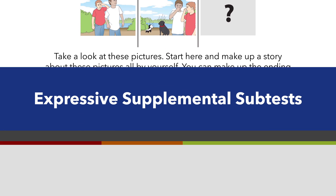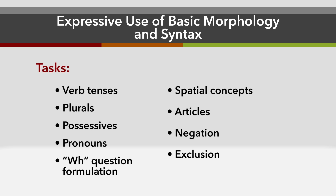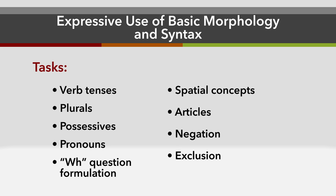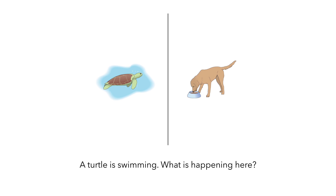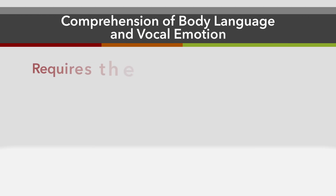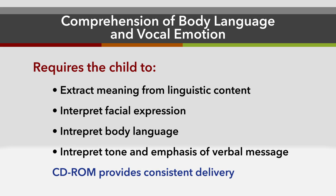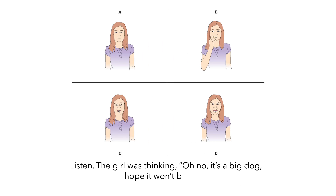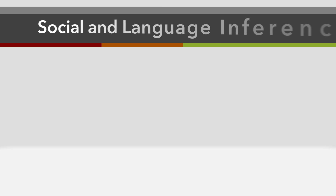The expressive supplemental subtests include the expressive use of basic morphology and syntax. The social communication core includes comprehension of body language and focal emotion, and social and language inference.